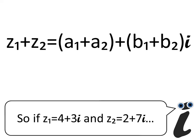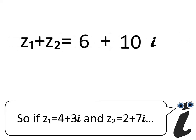So if z1 equals 4 plus 3i, and z2 equals 2 plus 7i...